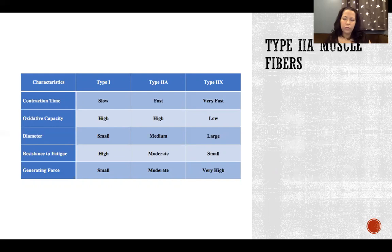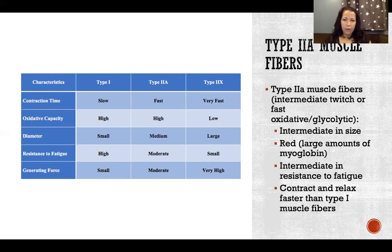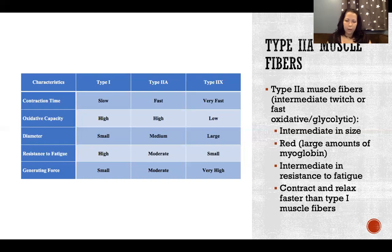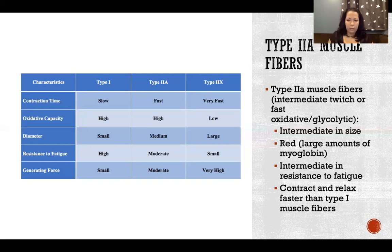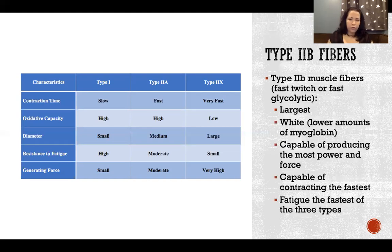Type 2a muscle fibers are the intermediate fibers, also referred to as intermediate twitch or fast oxidative glycolytic, reflecting that they contract faster than slow twitch and can utilize both oxidative and glycolytic energy systems. They're intermediate in size, which means intermediate force production. They're also red with large amounts of myoglobin, intermediate in their resistance to fatigue, and contract and relax faster than type 1 but not as fast as type 2b fibers.